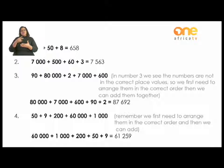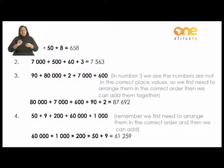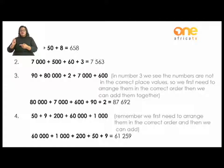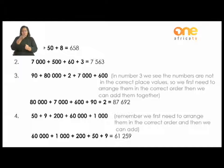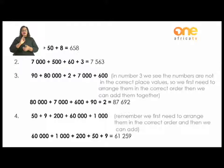Here we have a few examples where the expanded notation is already given. For example: 600 plus 50 plus 8. We add them together: 600 plus 50 plus 8 equals 658. Number two: 7,000 plus 500 plus 60 plus 3 equals 7,563.